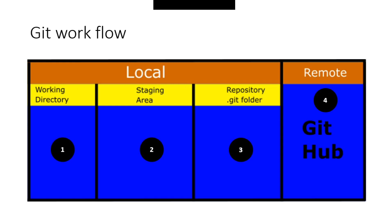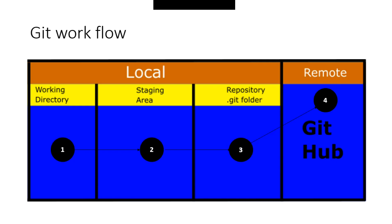The first one is GitHub. The first step is working directory — changing the code. If you want to change the code, it will go to the staging area, then the local Git repository, and then to the server, which is GitHub. This staging area is also called the index area. We also have the local Git repository, and the fourth one is called the remote repository, which in this case will be GitHub.